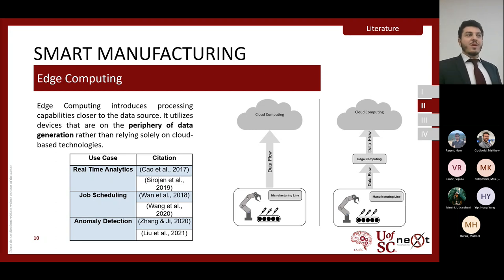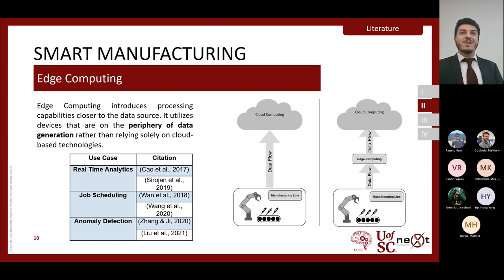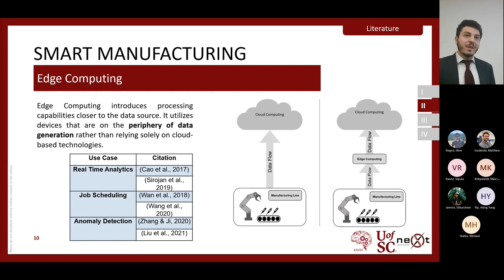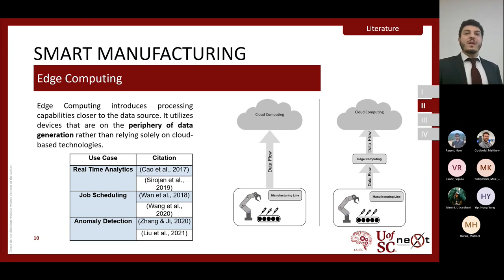Within literature there have been prominent use cases of edge computing, including: real-time analytics, where the edge layer's real-time processing improves manufacturing efficiency; job scheduling, where algorithms can dynamically allocate resources as required using shop floor data sent to the edge layer; and anomaly detection, where data sent to the edge device can be checked for outliers and alerts sent to technicians in near real time.